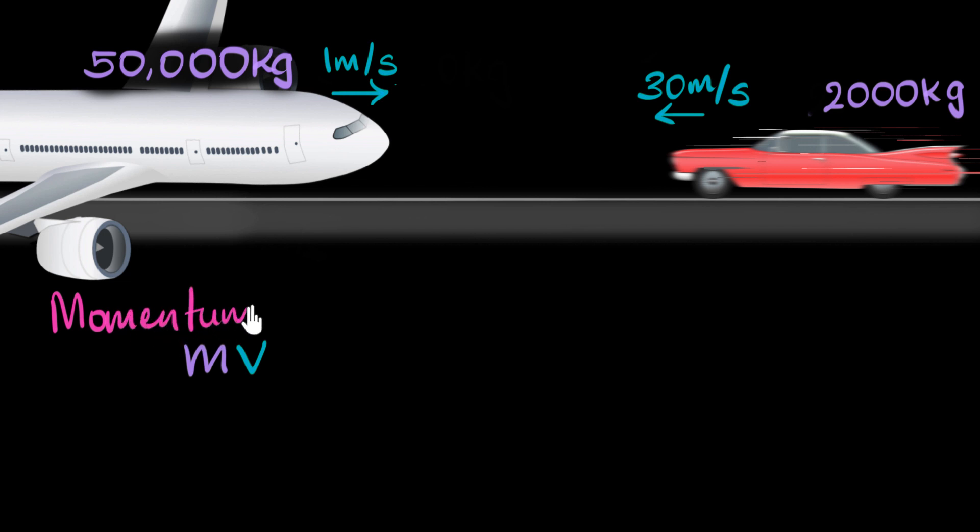We call this the momentum of that object. And the symbol used for momentum is p, because m is already taken.